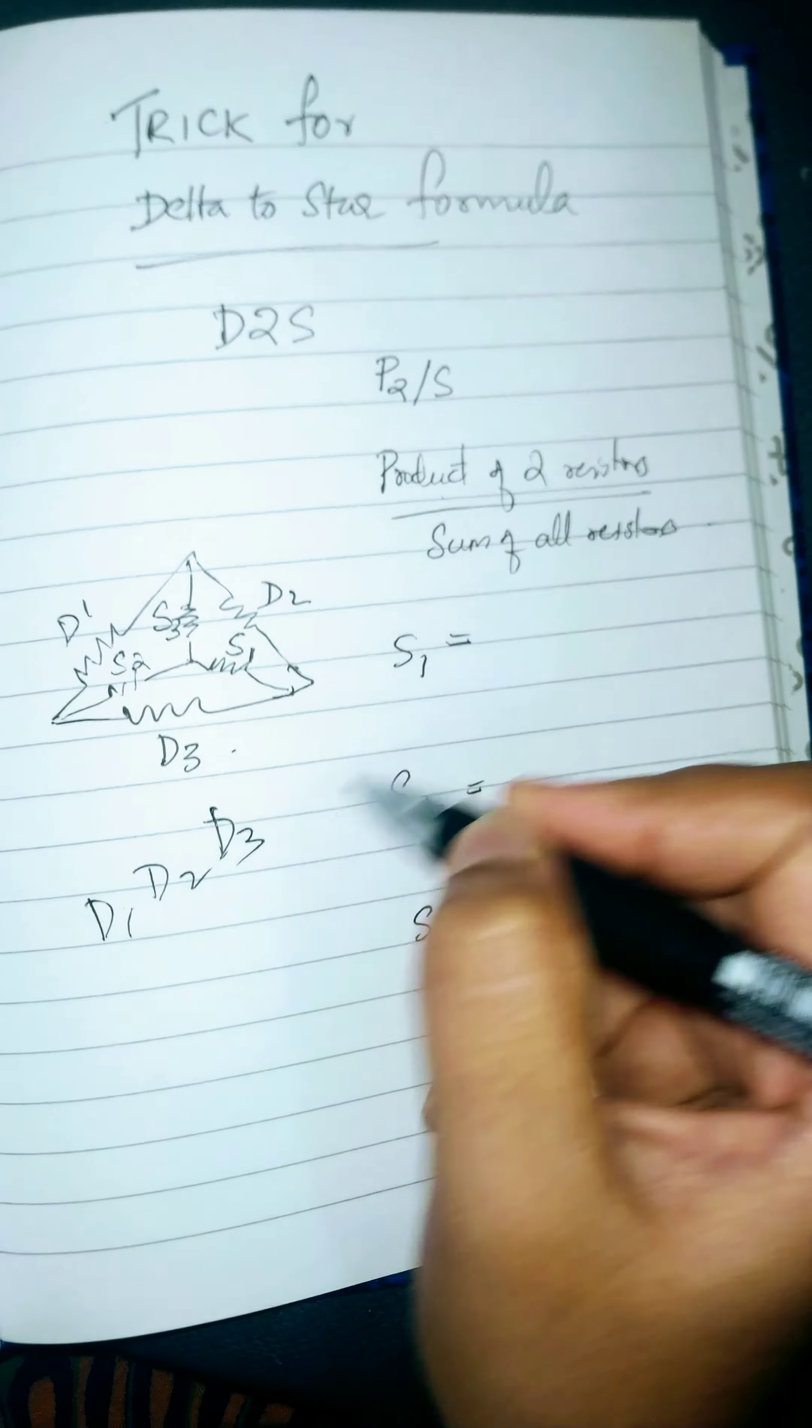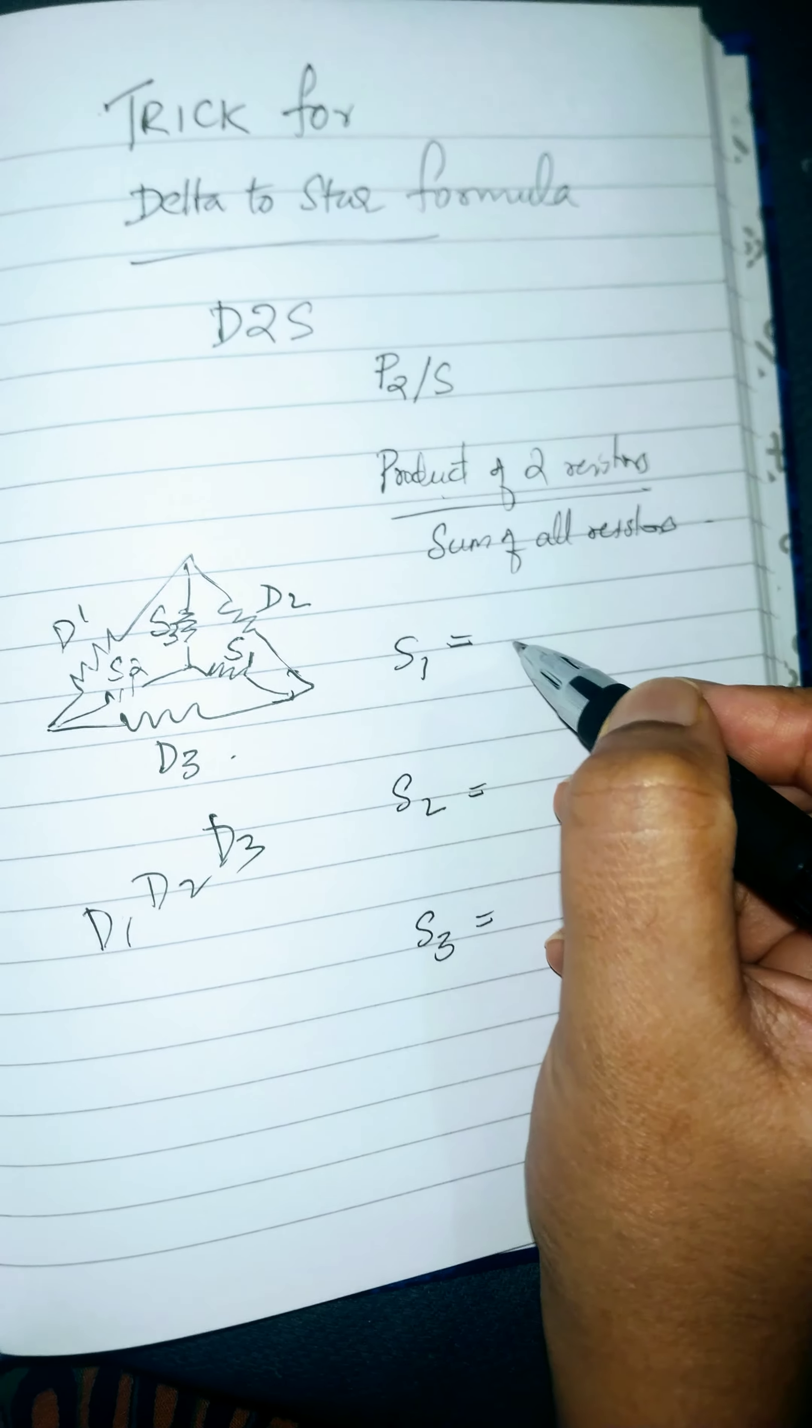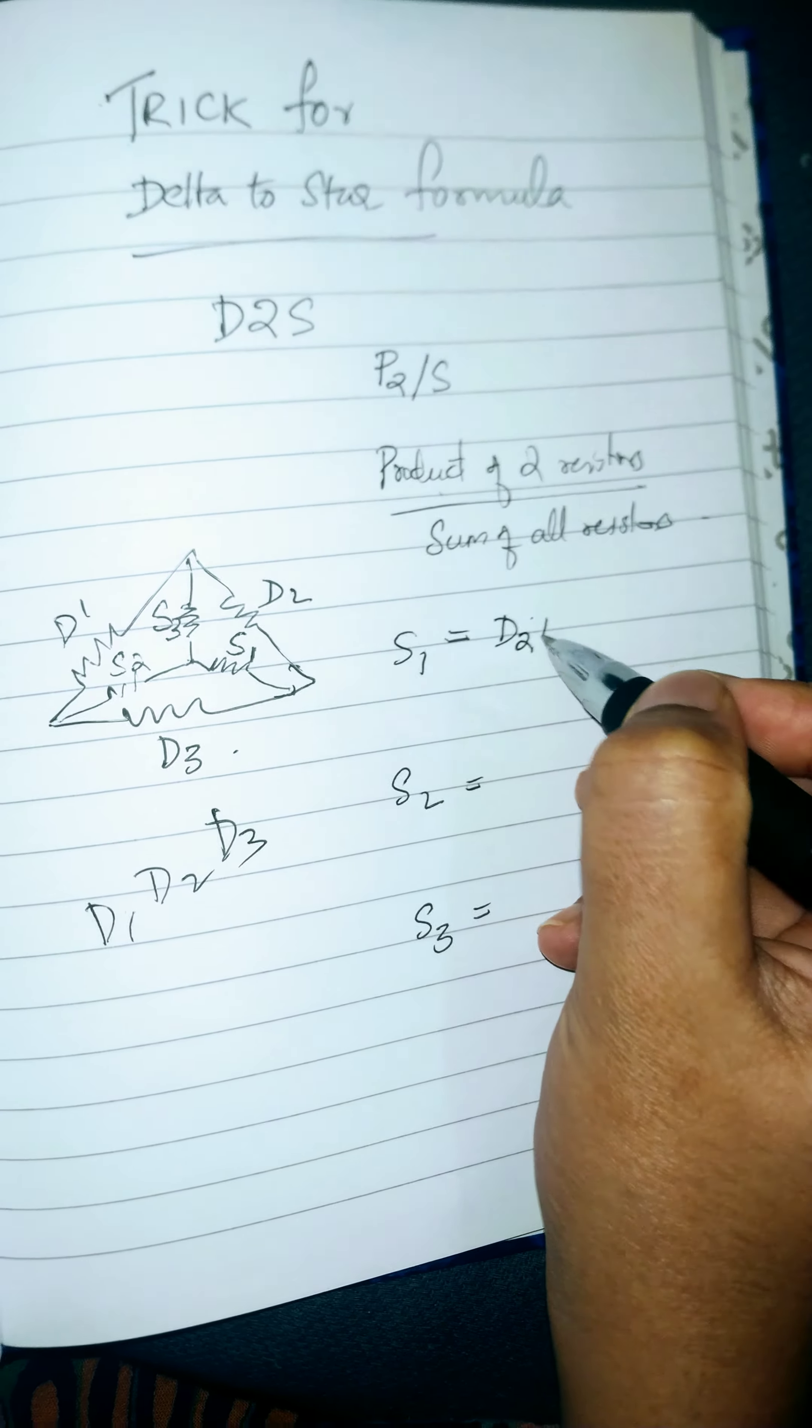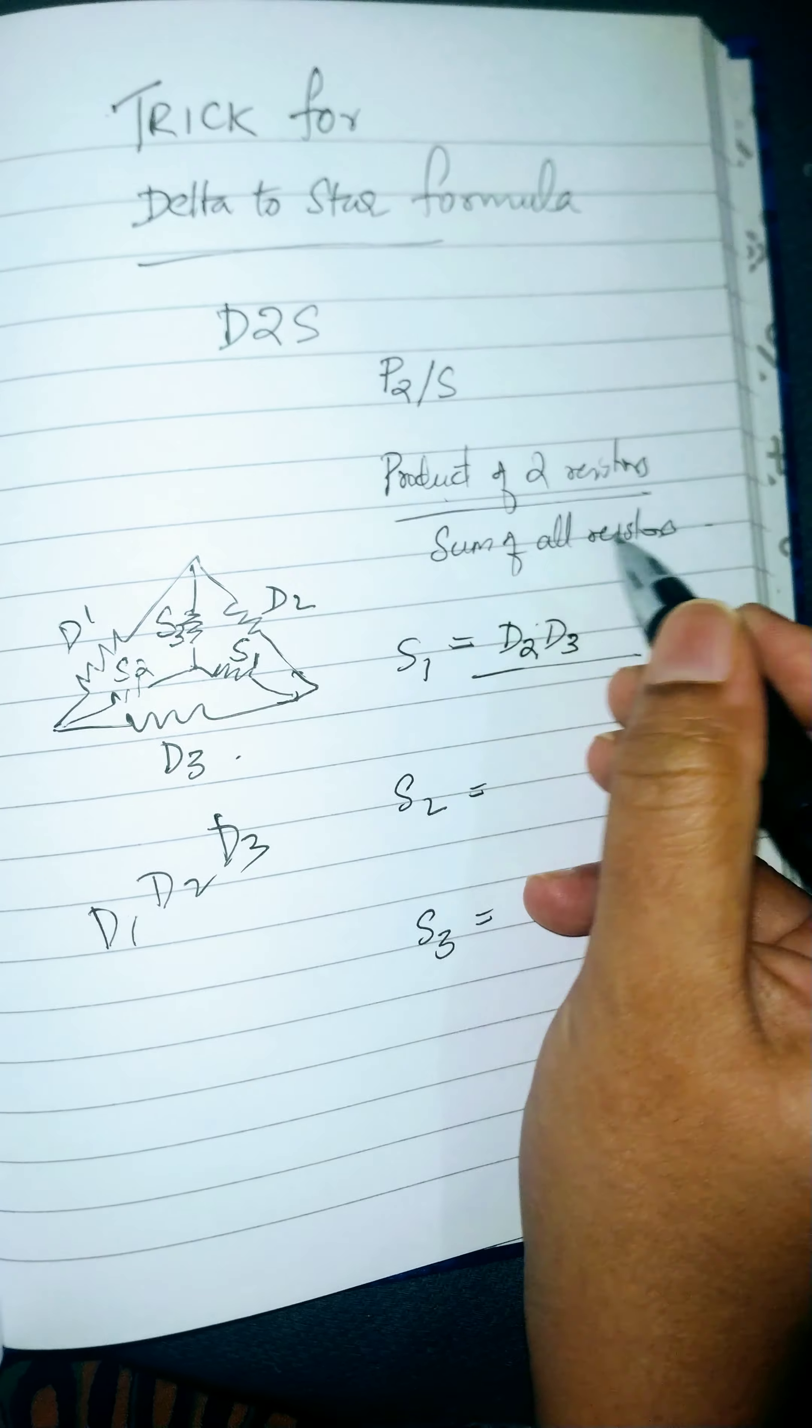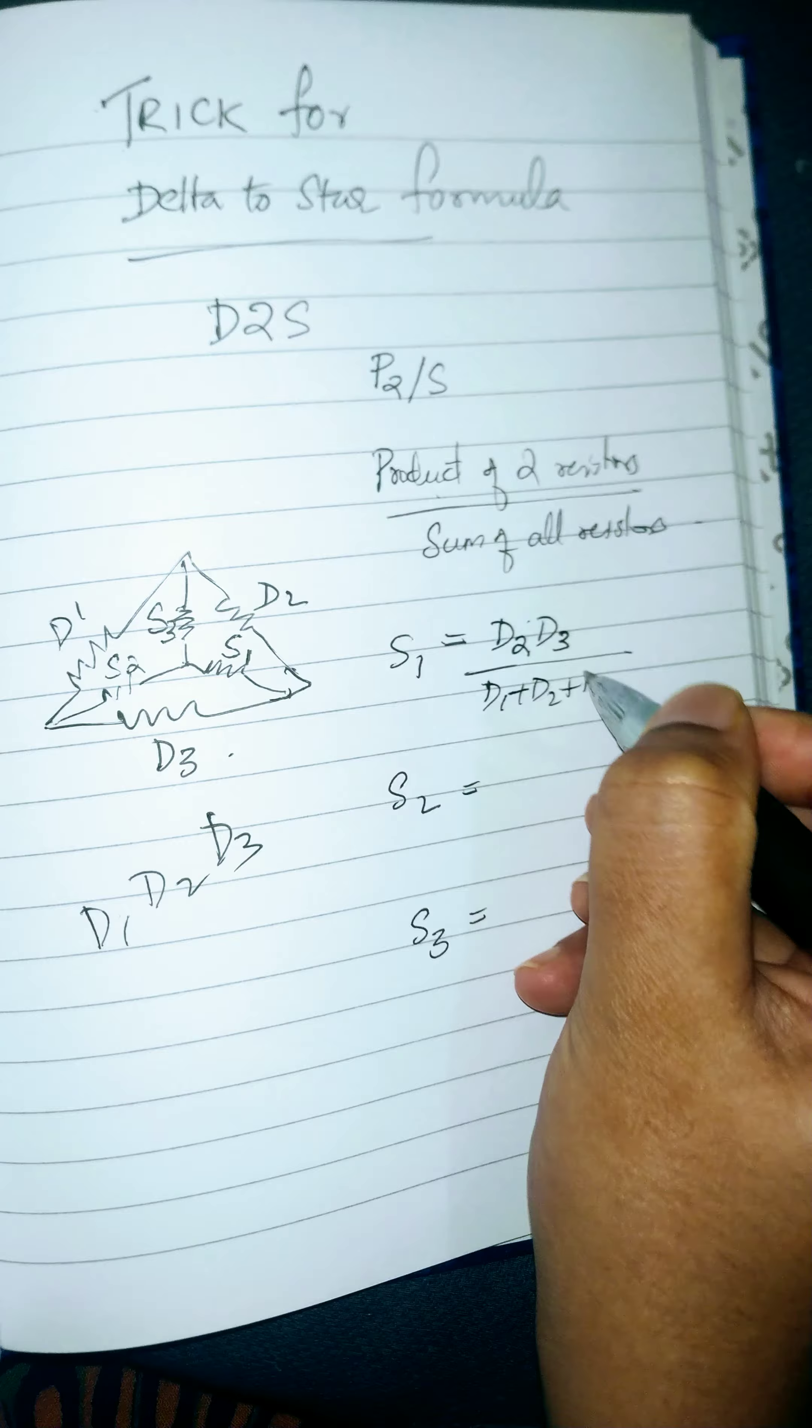Since it is S1, the subscript is 1, pick the resistors D2 and D3 divided by sum of all resistors you are given with - that is D1 plus D2 plus D3.